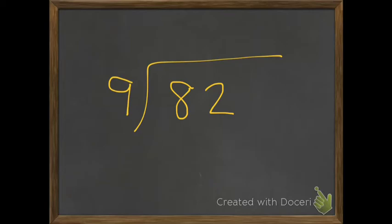So we have 82 divided by 9. We have to figure out what number is close to 82 that 9 can go into equally. Well, I am looking at 82, so let's just go through my 9 times table.